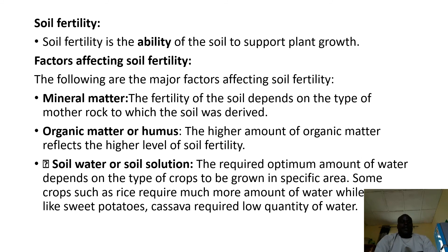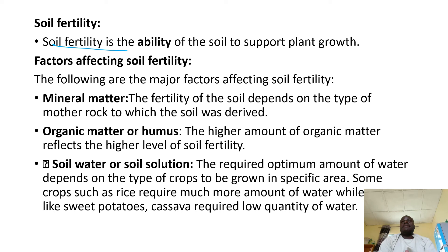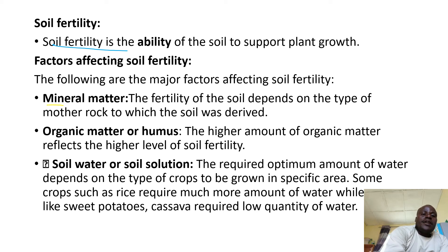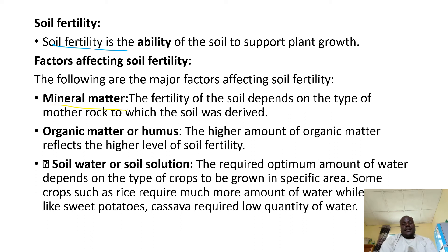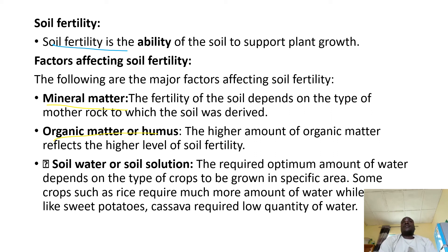Soil fertility — what is soil fertility? This is the ability of the soil to support plant growth. We have a number of factors affecting soil fertility. Number one: mineral matter — how much mineral the soil contains. Different crops need different minerals, so the more the minerals, the more the fertility. Number two: organic matter, because this is manure. Soils with enough organic matter or manure are more fertile than those without.